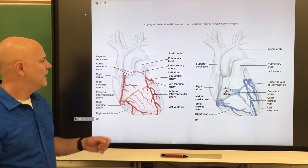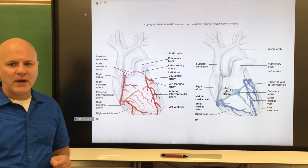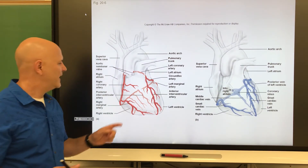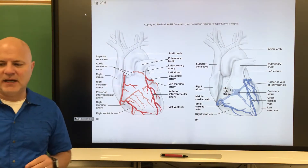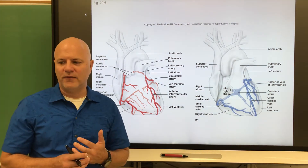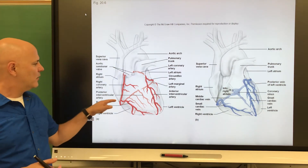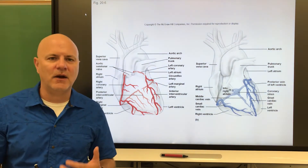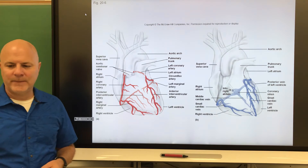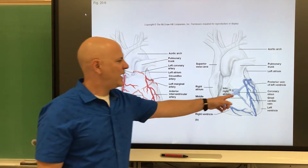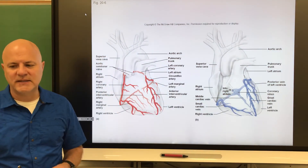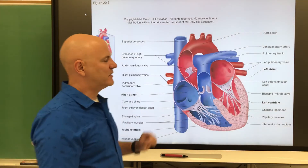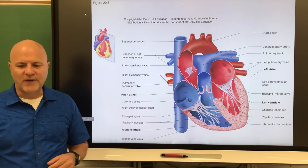Now let's look at blood vessels associated with the heart. The coronary arteries are arteries that supply blood to the tissues of the heart. If these become blocked, that leads to a myocardial infarction — a heart attack — because tissues downstream from the blockage don't receive blood and begin to die. The cardiac veins drain blood from the tissues of the heart.